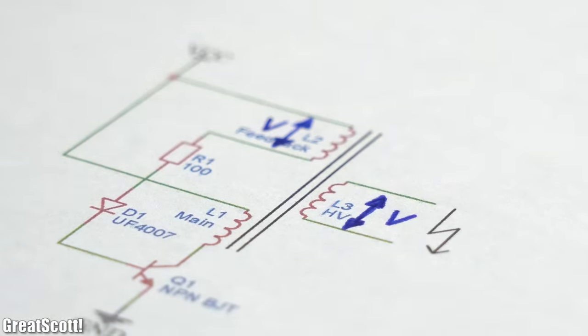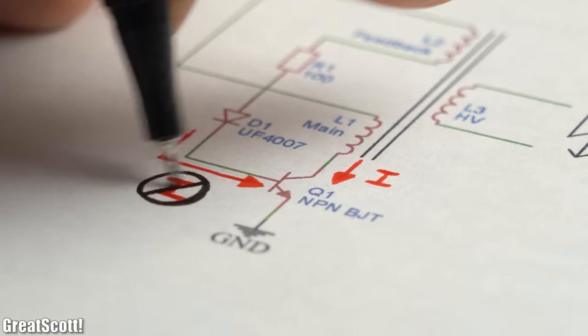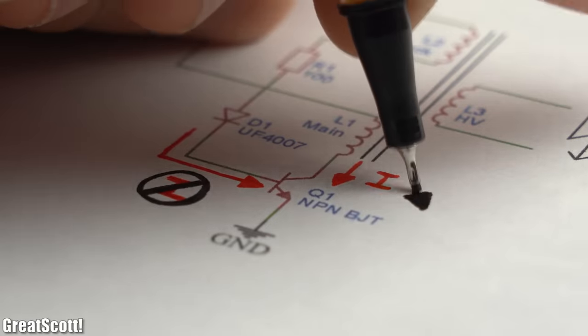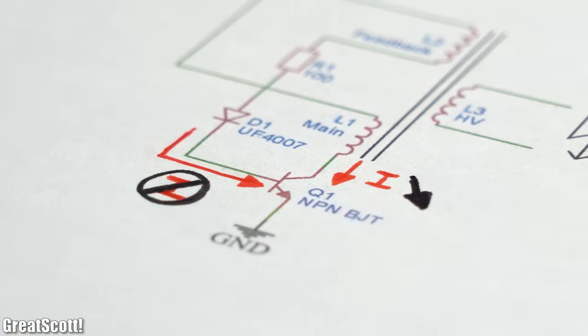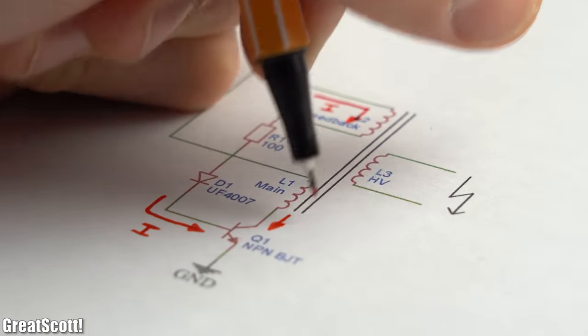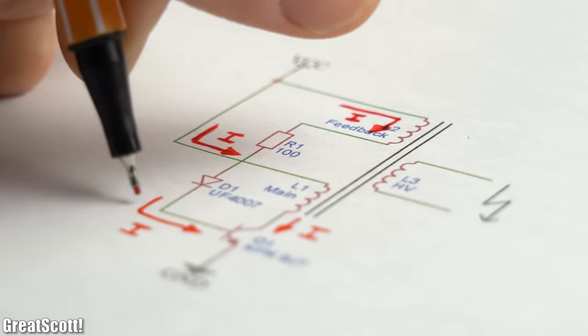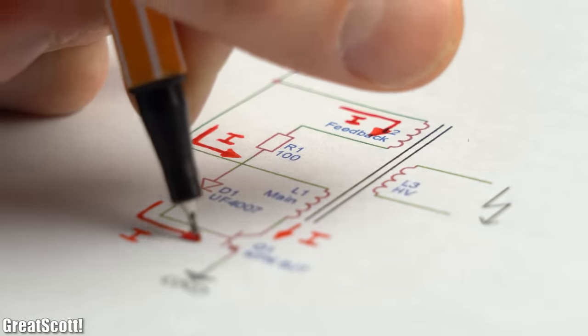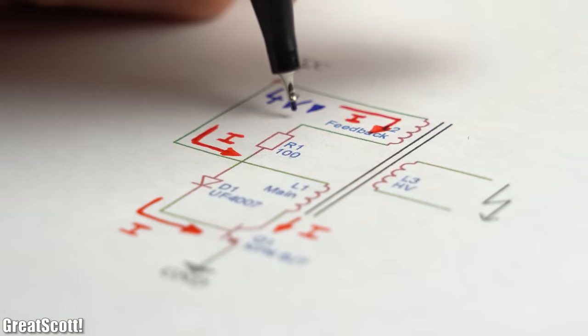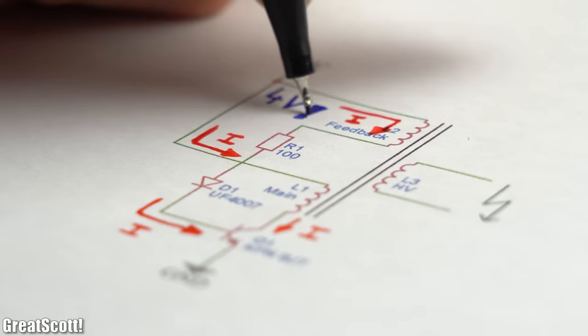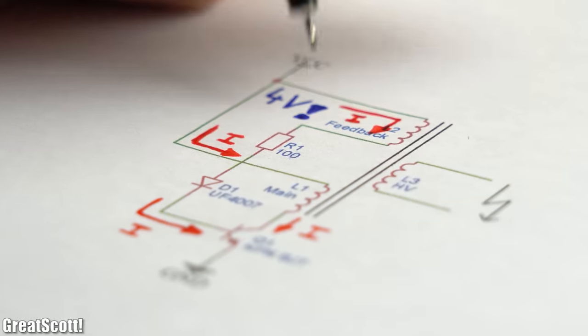That means at some point the current through the base stops and the primary current falls abruptly. Afterwards there is no more opposing feedback voltage and thus the cycle repeats. And because of the dependence on feedback current and the low voltage levels on the primary side this circuit is not a good fit for MOSFETs.